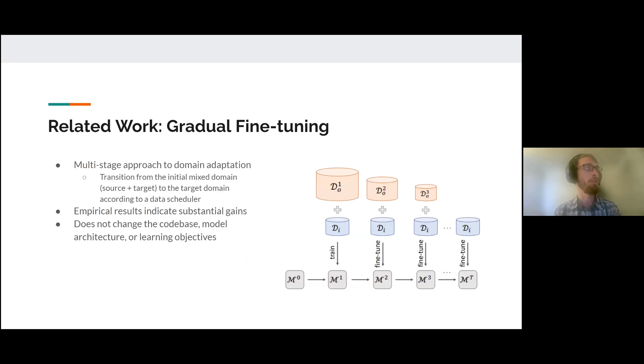Also, there's this technique called gradual fine tuning, which is a multi-stage approach to domain adaptation. Oftentimes, people will fine tune on a specific domain after a model is already pre-trained. Gradual fine tuning has empirically shown that when you do it in a staged approach, by gradually removing some of that out-of-domain data, it actually improves some of the results.